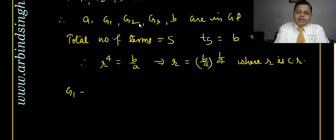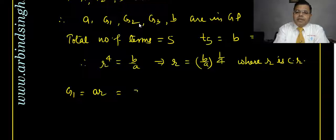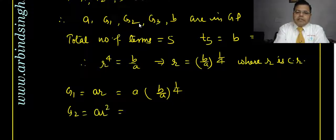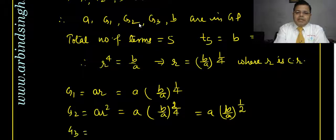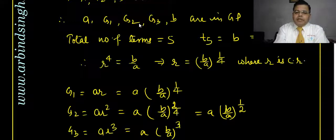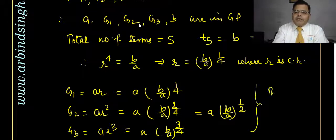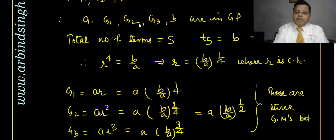So g1 is the second term: g1 = a·r = a·(b/a)^(1/4). Then g2 = a·r² = a·(b/a)^(2/4) = a·(b/a)^(1/2). And g3 = a·r³ = a·(b/a)^(3/4). These are the three geometric means between a and b.